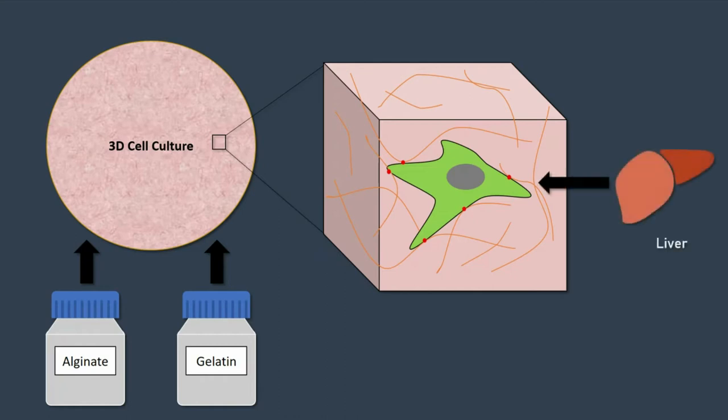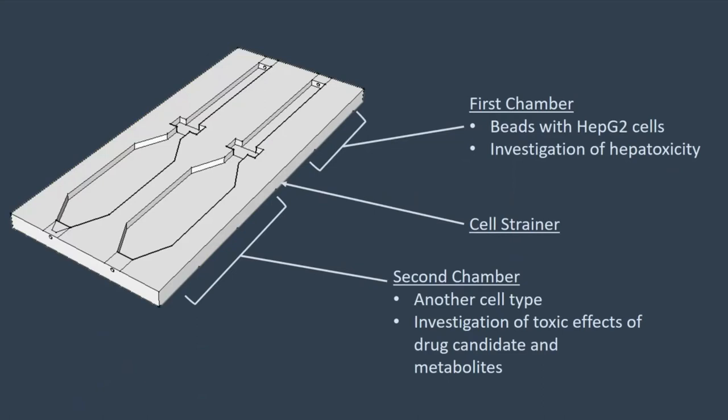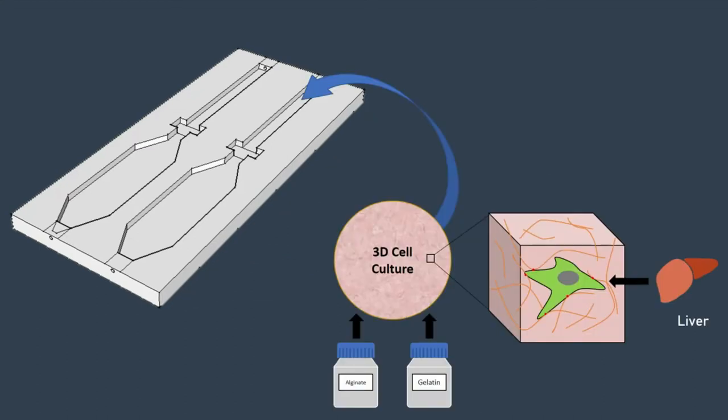For the 3D culture, we embedded HEPG2 liver carcinoma cells in alginate gelatin hydrogel beads. The liver-on-a-chip system consisted of two chambers that were connected in a continuous fluidic system. The beads were placed in the first chamber of the chip, the second chamber was intended to hold another cell type in order to investigate possible toxic effects of the drug candidate and its metabolites.